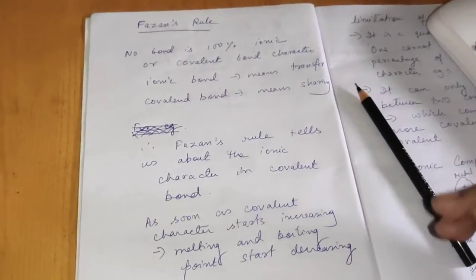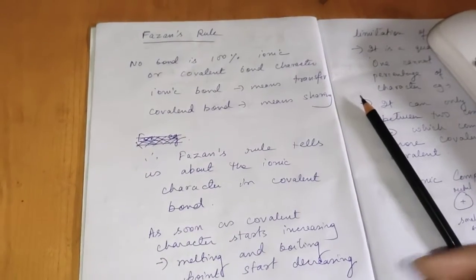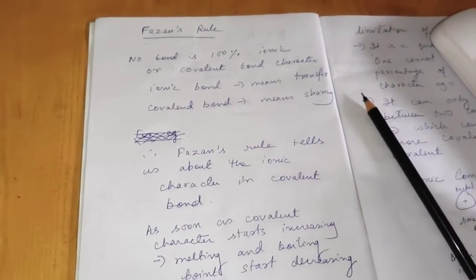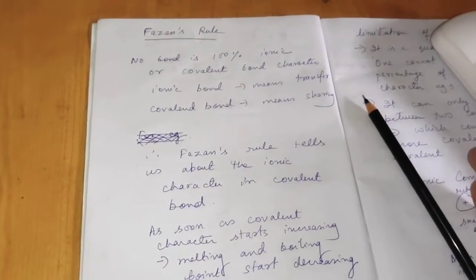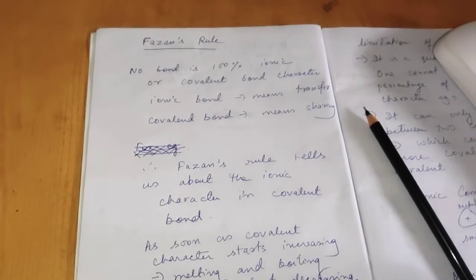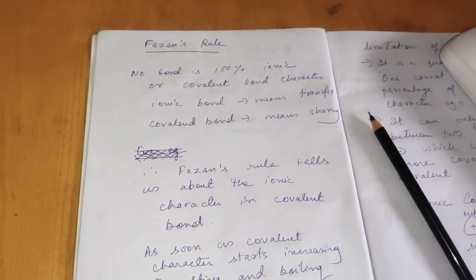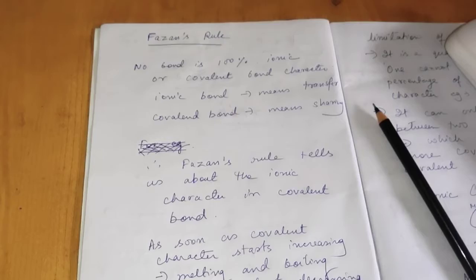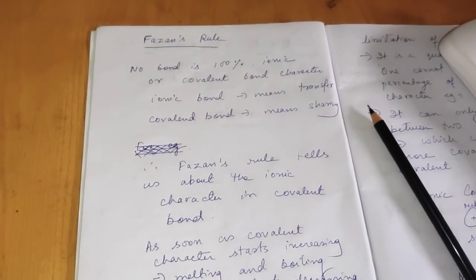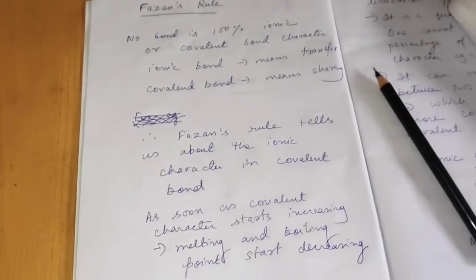So if it is an ionic bond there will be some amount of covalent character in that bond and vice versa. Similarly in a covalent bond some ionic character can be found. Ionic character means when the electrons are transferred from one ion to another and covalent bond means when the electrons are shared between the two ions.